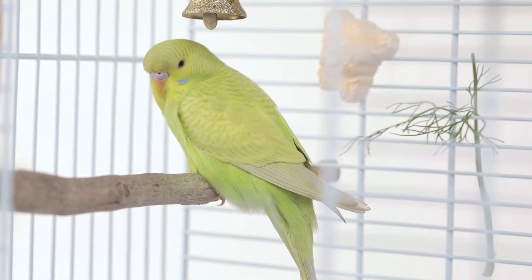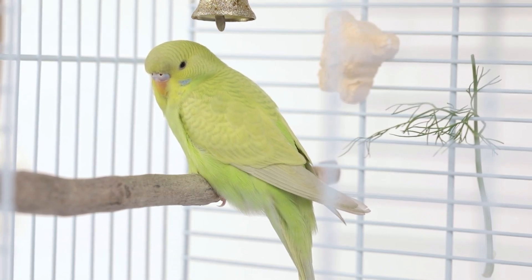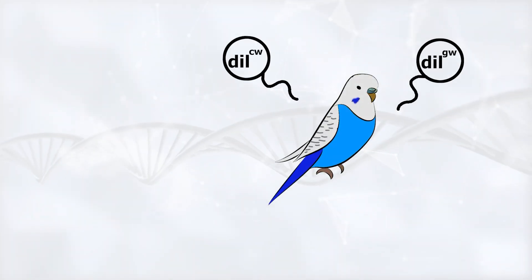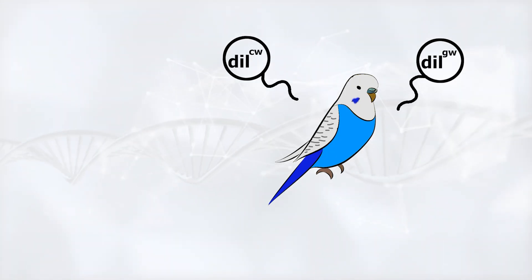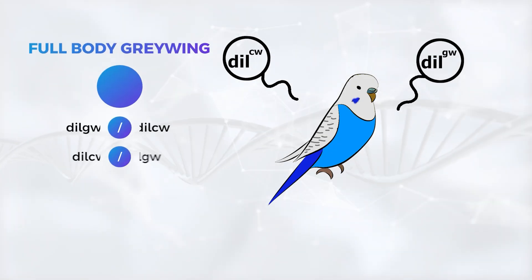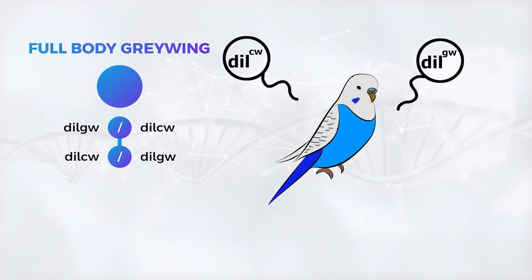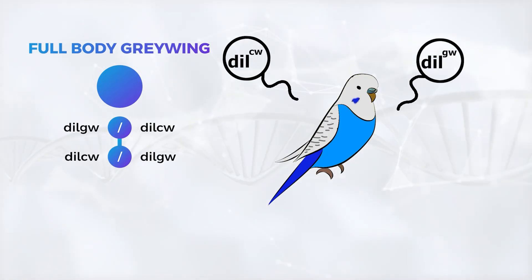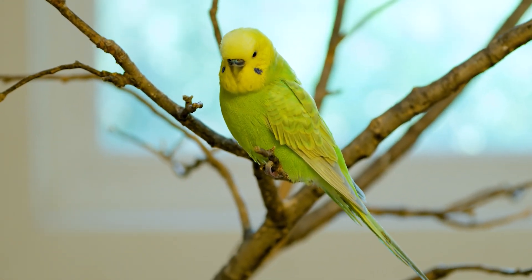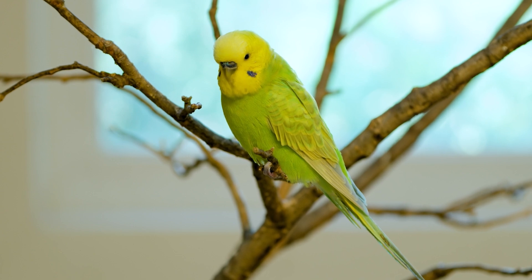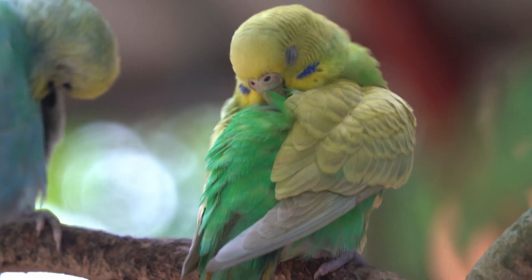Now, since we said clearwing and graywing are both dominant when the normal Dil isn't present, what happens if they both win the race? That's why we call them co-dominant. Instead of one blocking the other, neither one fully takes over — they actually work together, and the result is the full body graywing. So when a budgie has one clearwing allele and one graywing allele, you get the best of both: the bright full body color of a clearwing combined with the soft gray wings of a graywing. That's how the full body graywing is formed — a perfect example of two alleles sharing the stage.